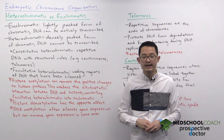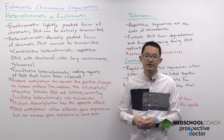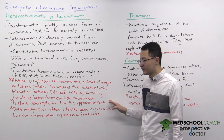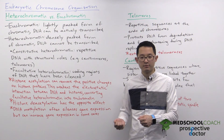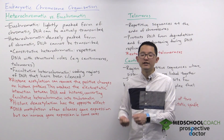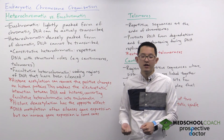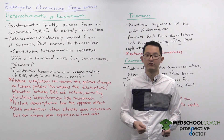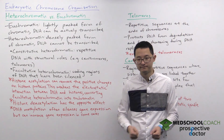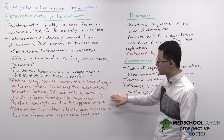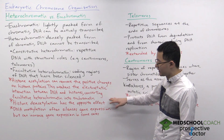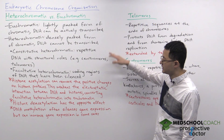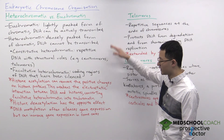Histone deacetylation has the opposite effect. Instead of adding acetyl groups, histone deacetylation removes acetyl groups, reintroducing the positive charge on the histone proteins and converting euchromatin into facultative heterochromatin. So acetylation is one important mechanism for switching between euchromatin and facultative heterochromatin, and vice versa.